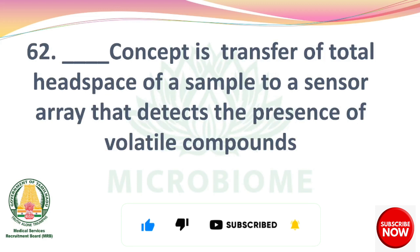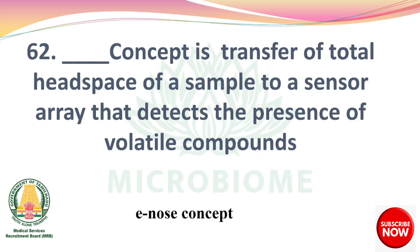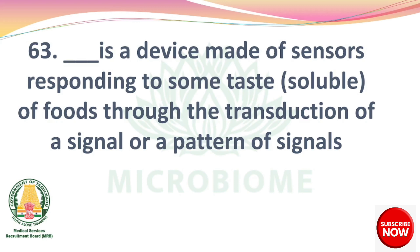Next, dash concept is the transfer of total headspace of a sample to a sensor array that detects the presence of volatile compounds — e-nose concept. Next, dash is a device made of sensors responding to some taste solutes of foods through the transduction of a signal or a pattern of signals — an electronic tongue.